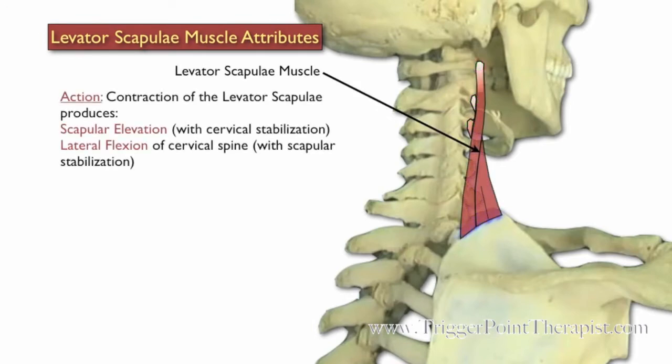Contraction of the Levator Scapula produces scapular elevation with the cervical spine stabilized, and lateral flexion of the cervical spine with the scapula stabilized.